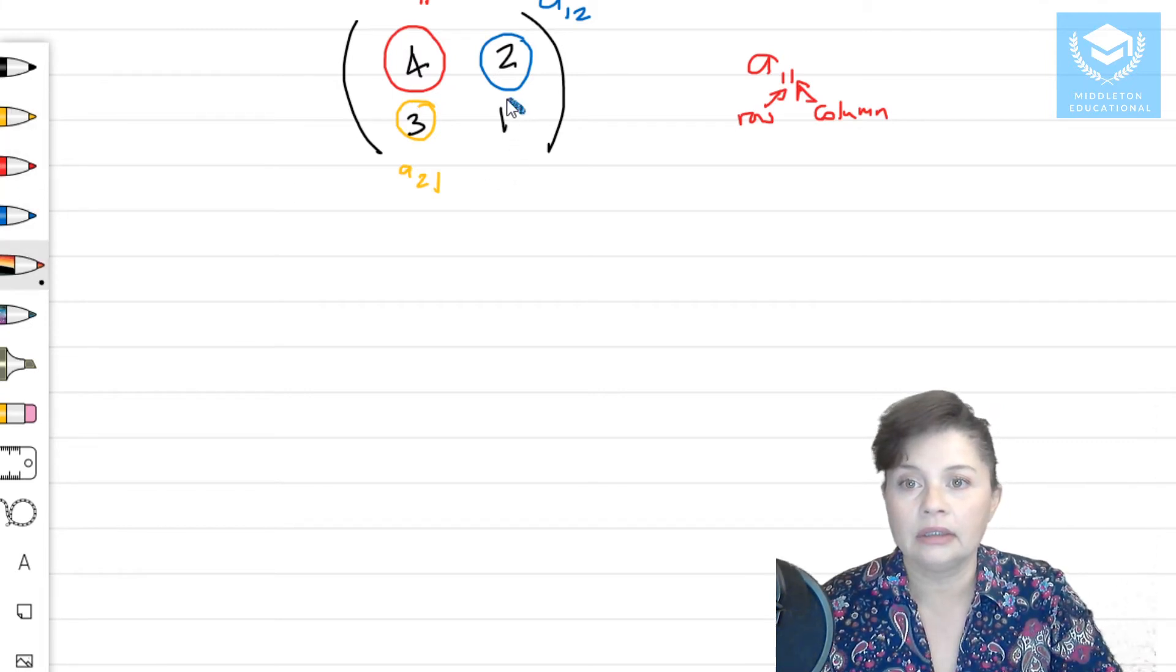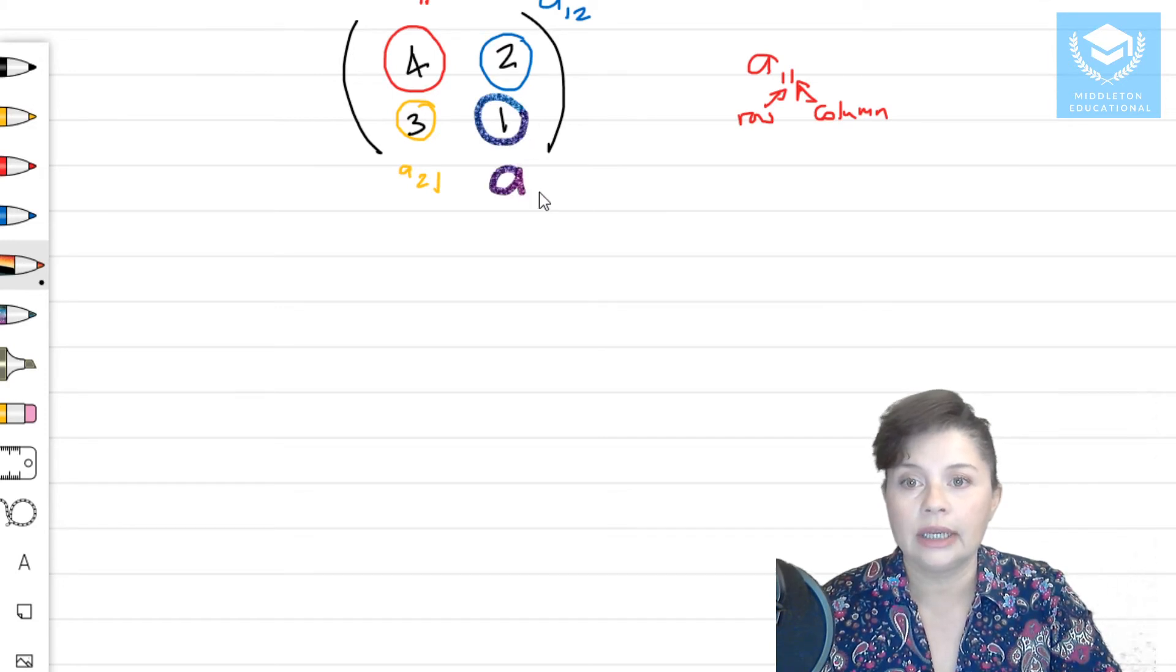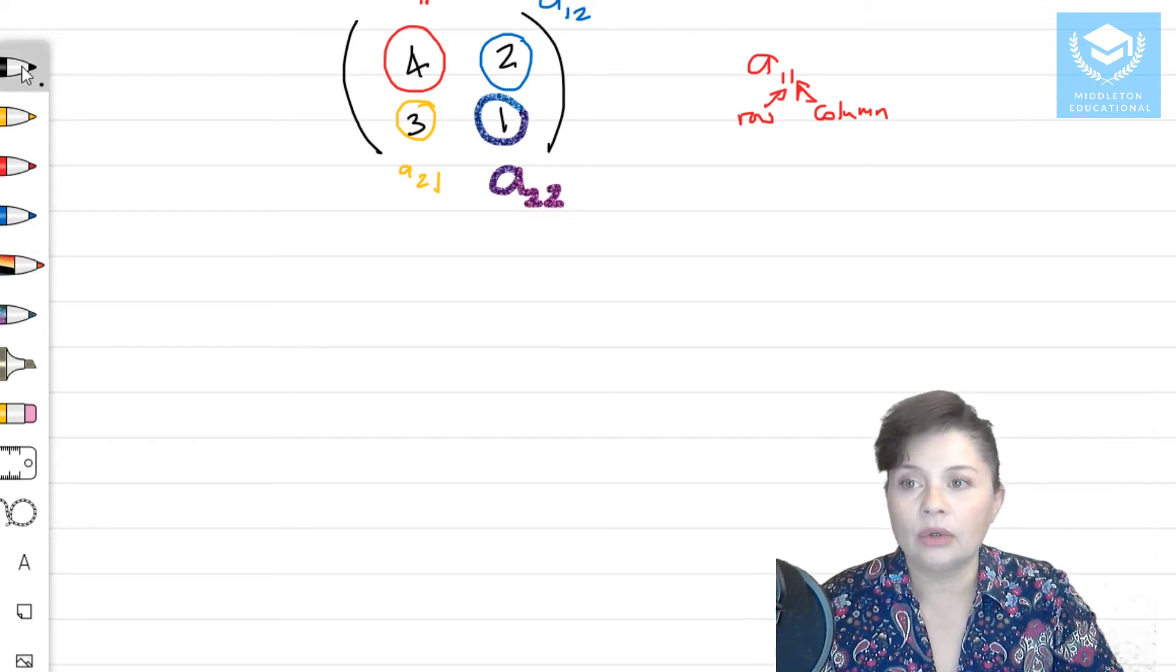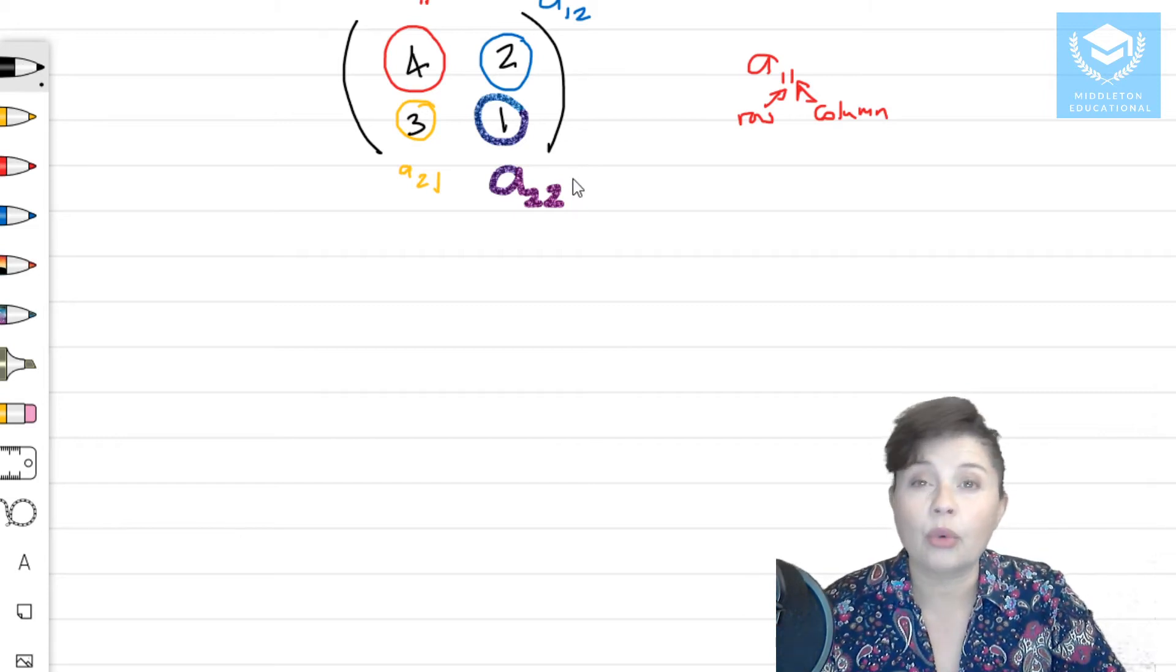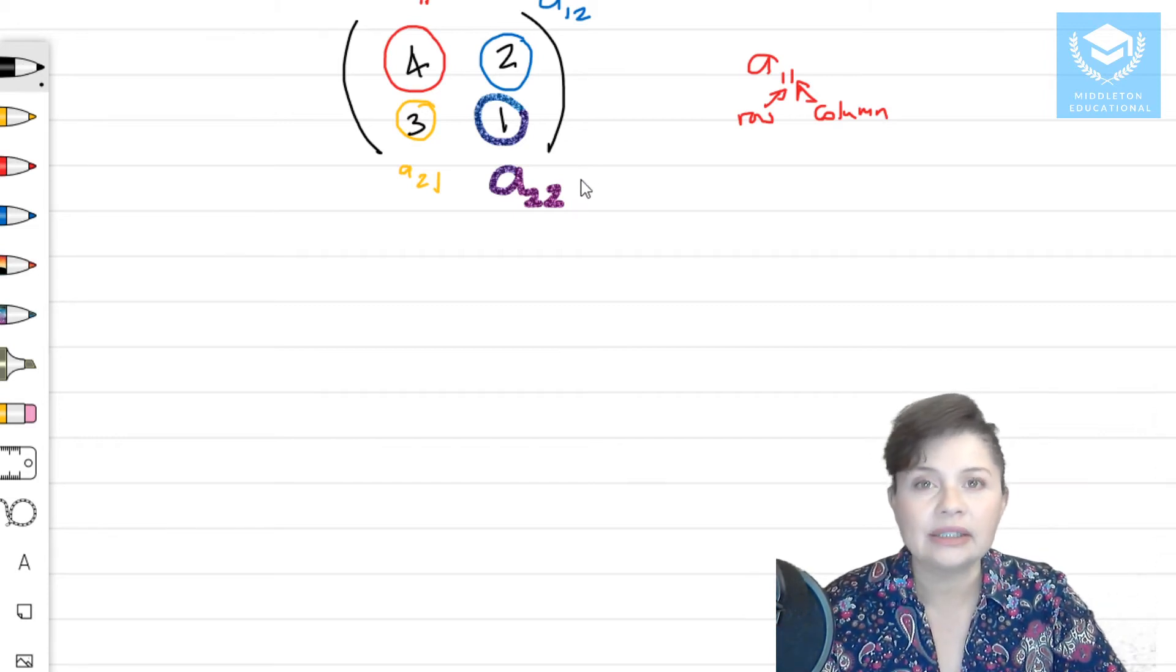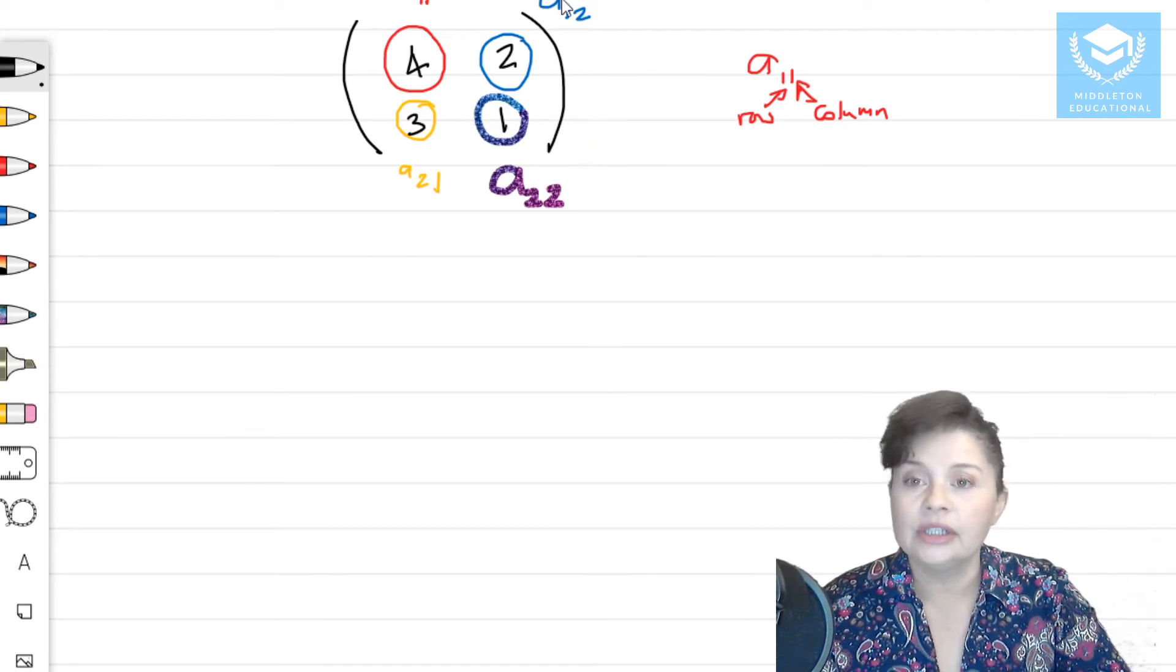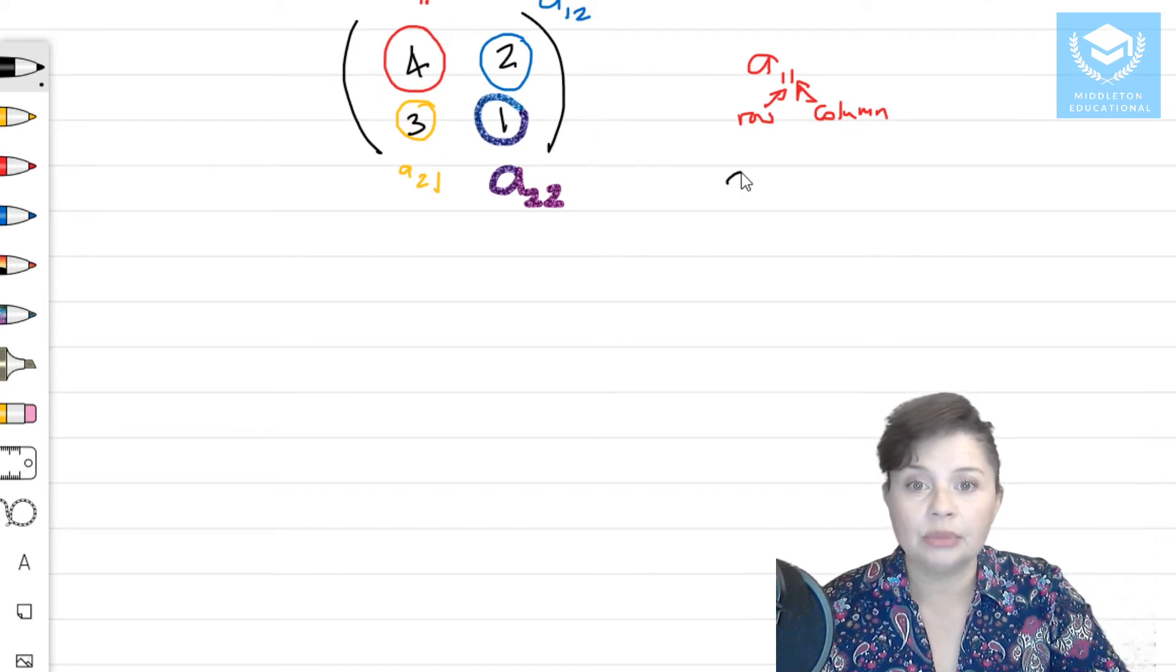And then that 1 would be a 2, 2, okay? Now, you also have something called the order of a matrix, and that is basically the size of the matrix. How many rows and how many columns. So this matrix is going to be a 2 by 2 matrix.